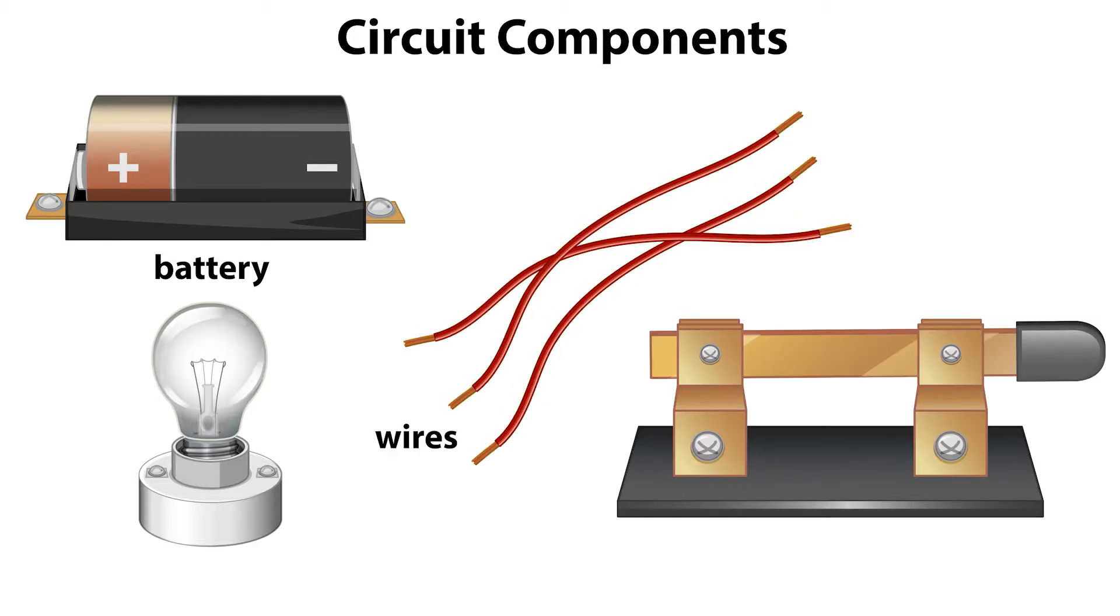The circuit must also have some type of load or resistor that uses the electricity flowing through the circuit to perform some task. In simple circuits, this is often a light bulb, but any device that uses electricity would work. While not an absolute necessity, a switch is a useful addition to a circuit because it allows us to easily control the current.